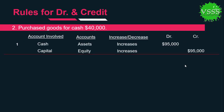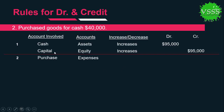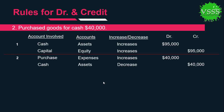In transaction two, he purchased goods for cash $40,000. Two accounts are involved: purchases and cash. Purchases belong to expenses; when expenses increase, they are debited, so we put $40,000 on the debit side. Cash is going out, it belongs to assets; when assets decrease, they are credited, so cash is placed on the credit side.